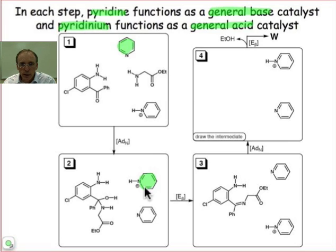In going from box 2 to box 3, that pyridinium serves as a general acid donating its proton and becoming the neutral pyridine.